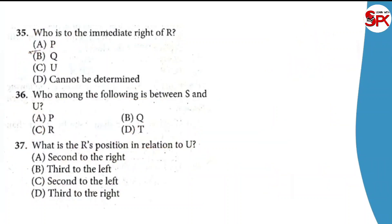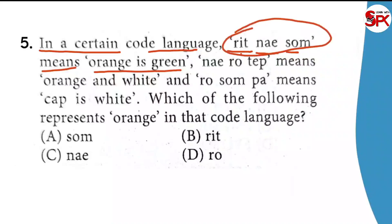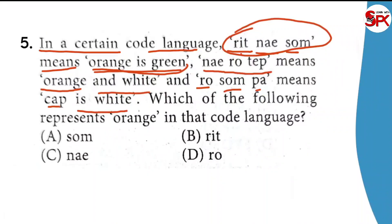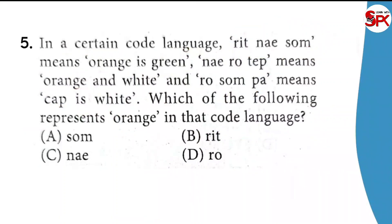So, let me discuss one more important question. The question is: In a certain code language, 'r i t n a e s o m' means 'orange is green.' If 'n e a e r o t e p' means 'orange and white,' and 'r o s o m p a' means 'cap is white,' then which of the following represents 'orange' in the code language? I think this is a very interesting question. Please try to answer it well and comment your answer in the comment box below.